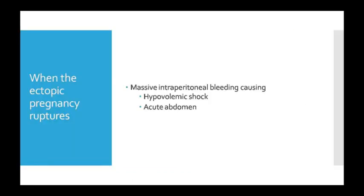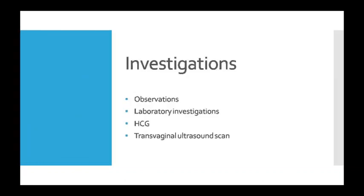Agar ectopic pregnancy rupture ho jaaye toh massive intraperitoneal bleeding ho jaati hai — bahut zyada heavy bleeding hoti hai, jisse person hypovolemic shock mein aa jaata hai. Hypovolemic shock mein blood ki kami ho jaati hai, cardiovascular collapse hota hai, aur blood volume kam hone se tissues tak oxygen pahunchna kam ho jaata hai. Saath hi acute abdominal pain bhi start ho jaata hai.